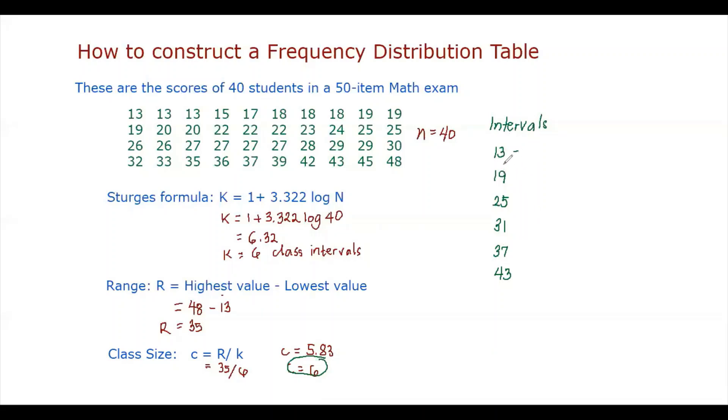So to find the upper class limits, we just subtract 1 from the next lower class limit. So 19 minus 1 is 18. And then to find the other upper class limits, we just add the class size, 6. So 18 plus 6 is 24, which is 25 minus 1. And then 24 plus 6 is 30, and then 36, and then 42, and then 48.